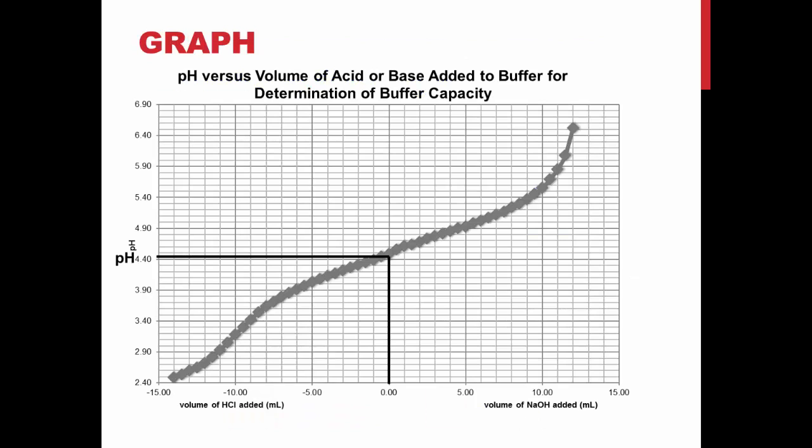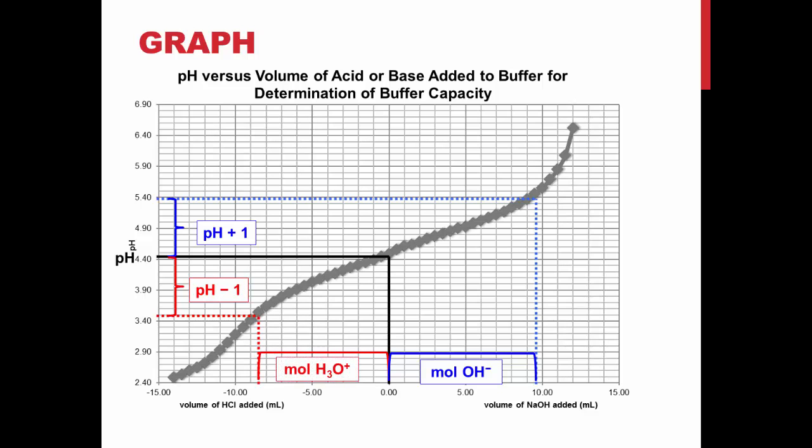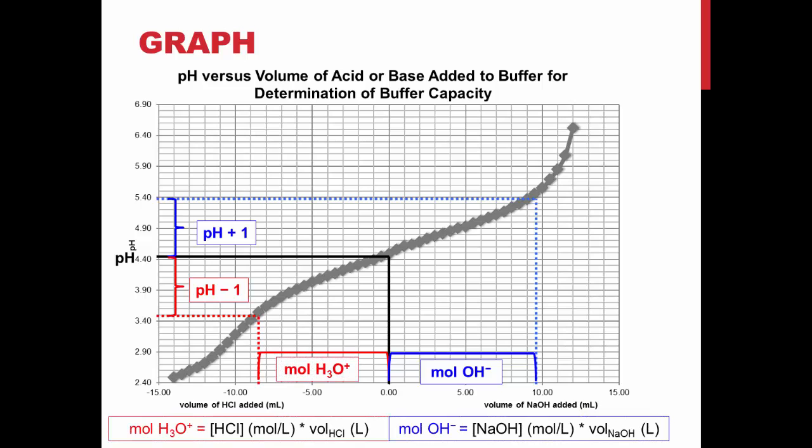The pH and volume data you obtained will be plotted as shown. The buffer capacity can be determined from this graph by finding the volumes of hydronium or hydroxide added to the solution that caused a pH change from the initial pH of the solution to minus or plus 1. By multiplying the volume by the concentration of the acid or base which was used, the number of moles of hydronium or hydroxide it took to cause the change in pH of the buffer can be found.